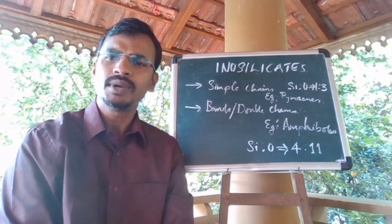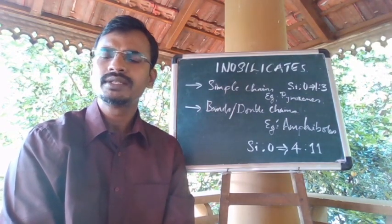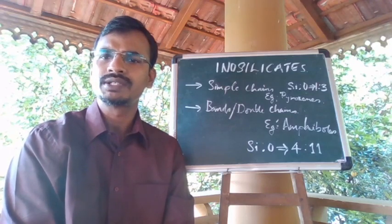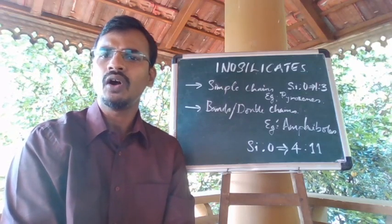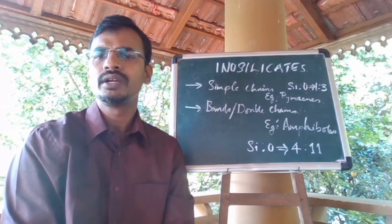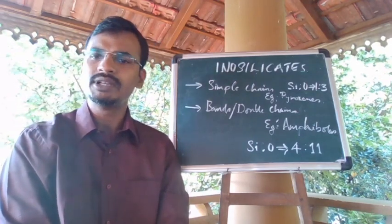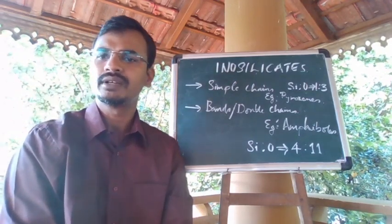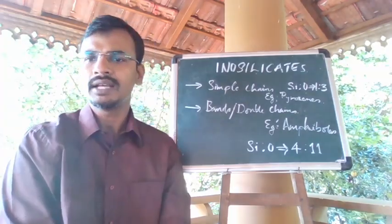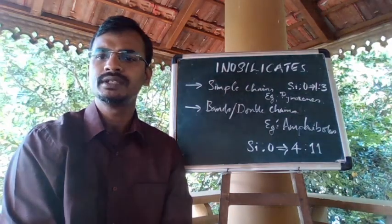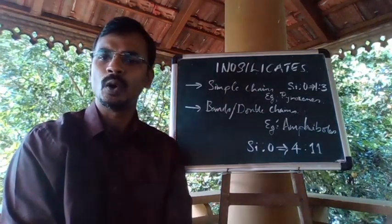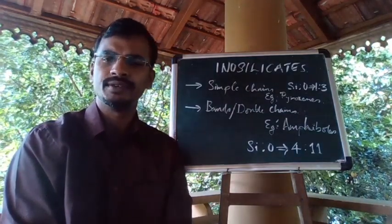Such simple chains may be joined side by side, or laterally by sharing the oxygen of the alternate tetrahedra, which forms the bands or double chain structure. In the double chain structure, half of the tetrahedra share three oxygen and the other half share two oxygen, yielding a ratio of Si to O as 4 to 11.